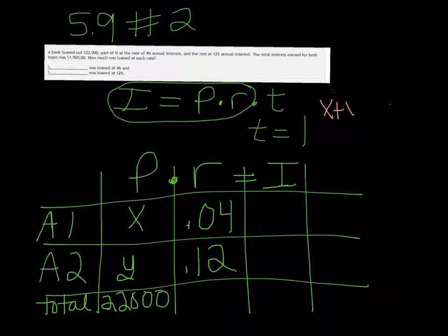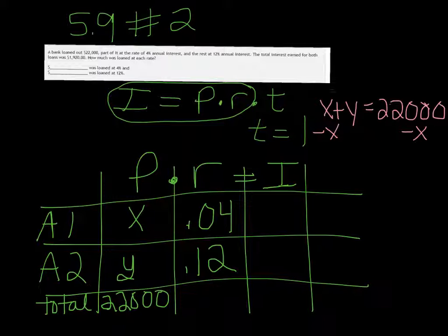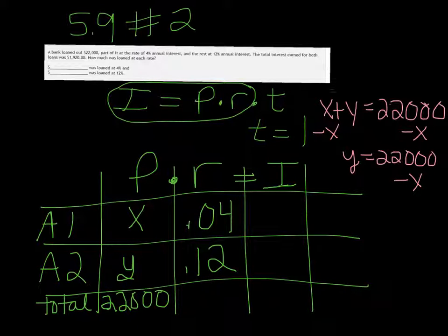So X plus Y equals $22,000. Well, I could solve for Y by subtracting X on both sides, and I get that Y is equal to $22,000 minus X. And that's what we want to use instead of Y. So I'm going to erase that Y, and I'm going to put $22,000 minus X. And you don't have to go through that step every time. Hopefully, after you do it a few times, you realize that if one account has X in it, then the other one, you would just take the total and subtract X to get that one. So now we're ready to multiply.